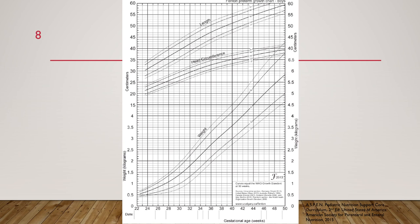This growth chart, which you may have seen at a pediatrician's office, helps assess length, head circumference, and weight of pediatric patients. The x-axis shows age and the y-axis shows weight or length. The dark black line in the middle represents the 50th percentile, or z-score of 0. The dotted lines above and below correlate to different percentiles above or below the average.